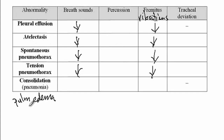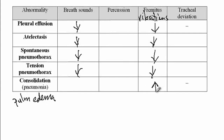On the other hand, with consolidation, since there is now fluid inside the lungs, there would be better transmission of vibrations. Just note: with pleural effusion, the fluid is inside the pleural cavity and acts like a shield, inhibiting vibration transmission through the lungs. Versus consolidation, where fluids are inside the lungs itself, and thus transmission of vibrations is better.